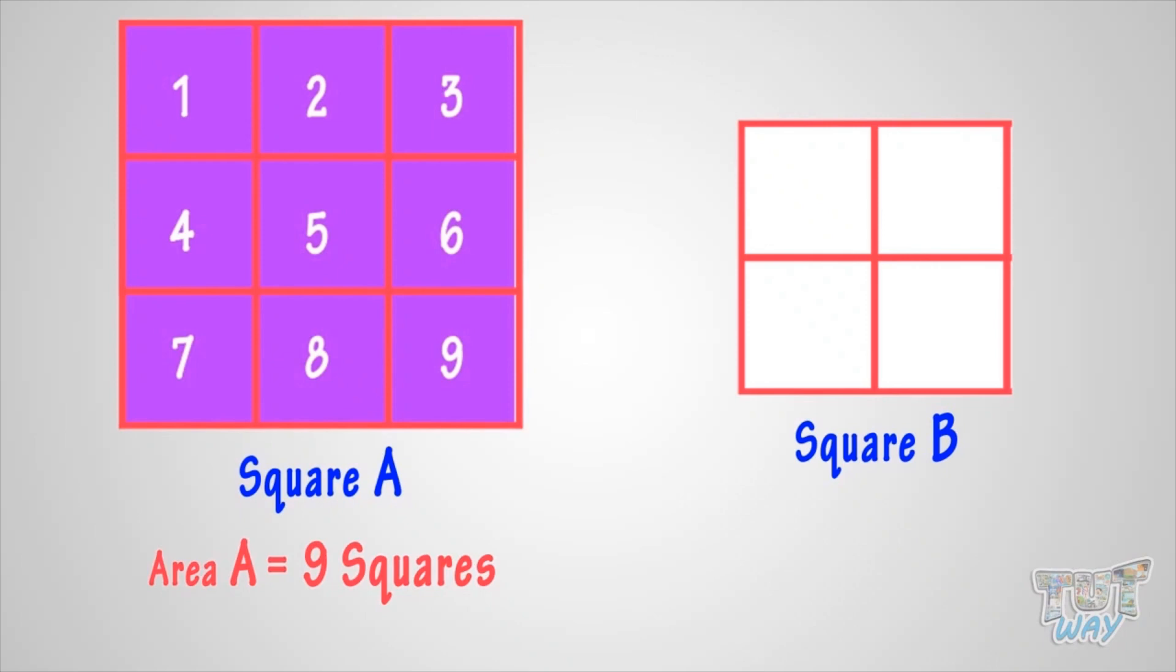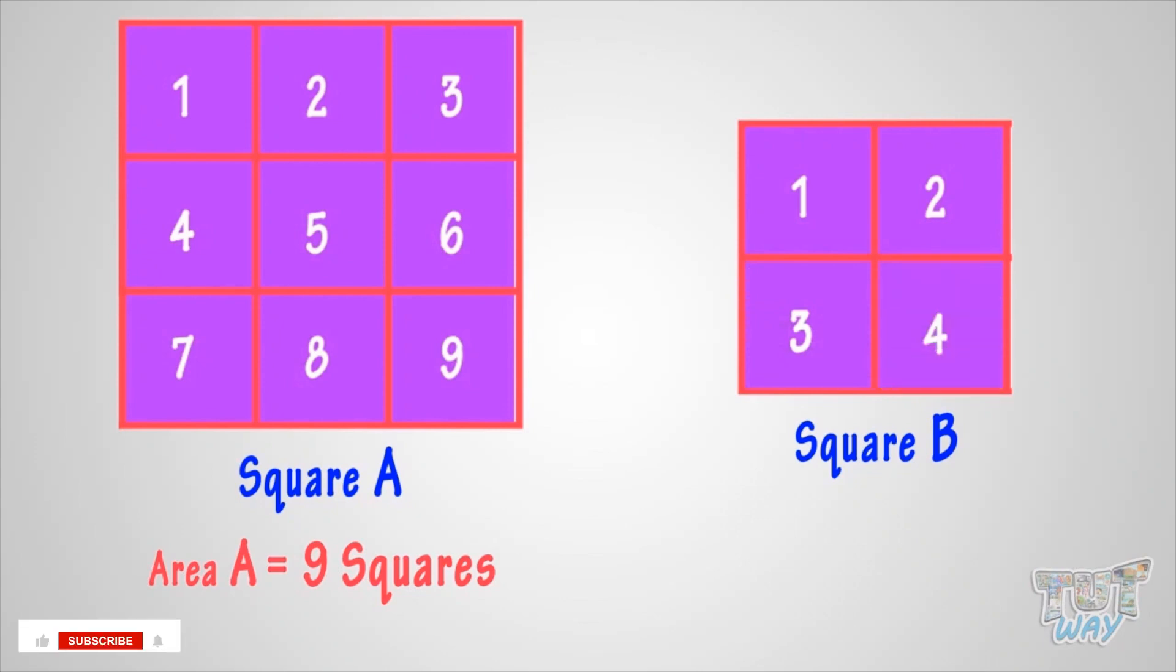And what's the area of square B? Count the squares in it. 1, 2, 3, 4. There are 4 squares in it. So you can say area of square B is equal to 4 small squares.